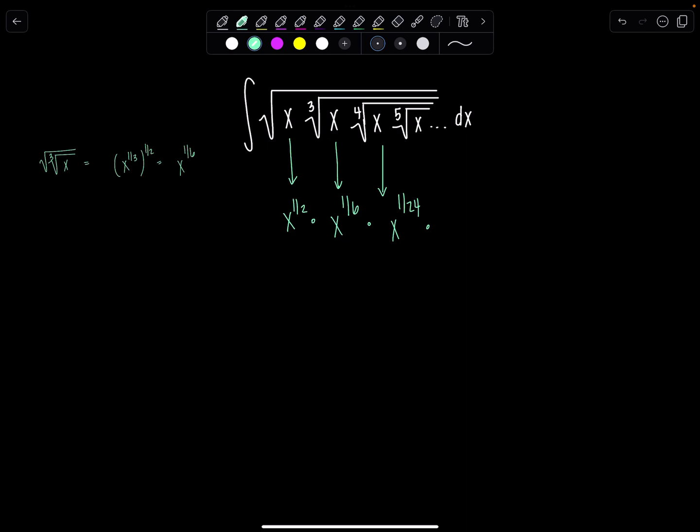Similarly this fifth root of x is also underneath the fourth root, the cube root, and the square root, so that would be x to the 1 divided by 5 factorial, 5 times 4 times 3 times 2 which is 120, and then so on and so forth.